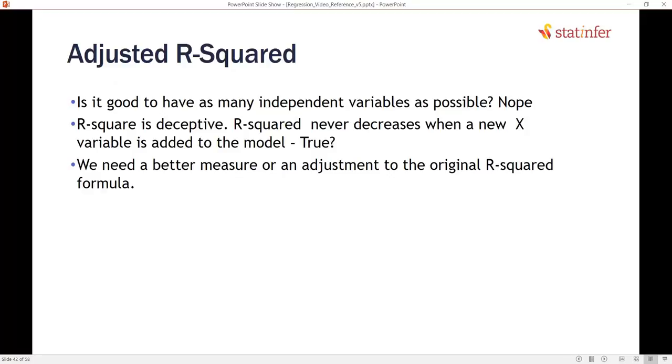Now, that is wrong. That is like cheating ourselves, right? You keep on adding some variables that are not at all related to target, that are not at all explaining anything about the target, but R-square is increasing or it's near to 100%.